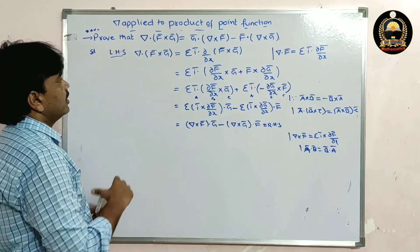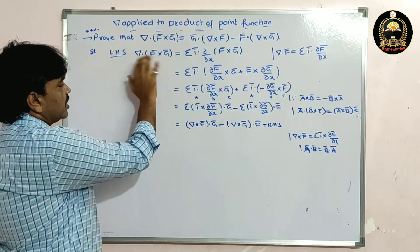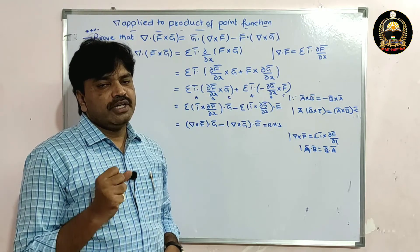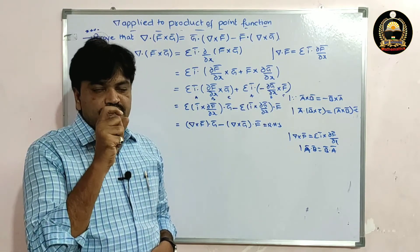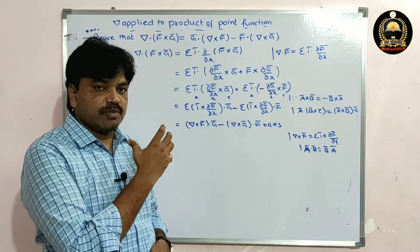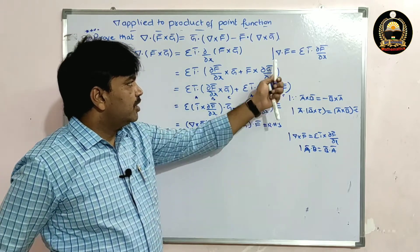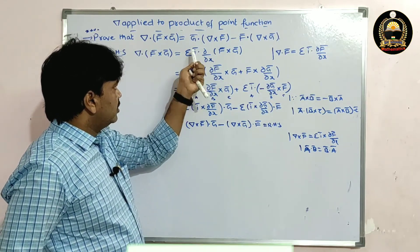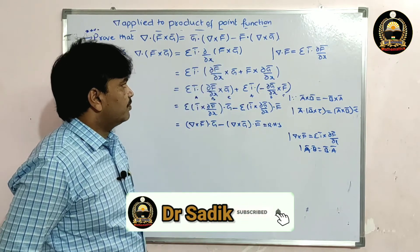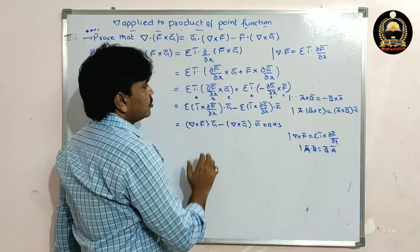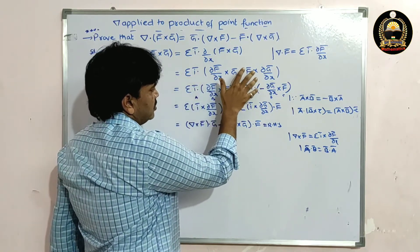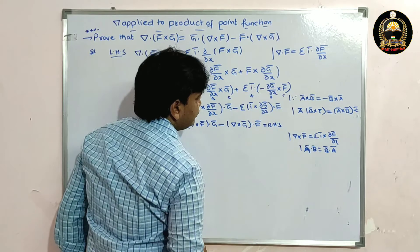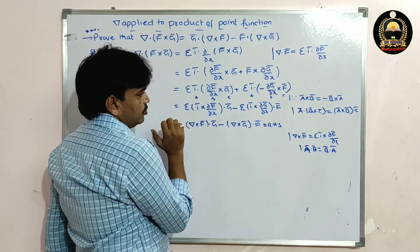Once again, LHS is del dot f-bar cross g-bar. Apply the basic divergence formula, then apply properties of derivatives. Rearrange the terms using suitable formulas to get the RHS. If you know the basic formulas, these properties become very easy. First understand the basic formulas, then these properties become straightforward.